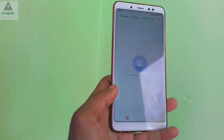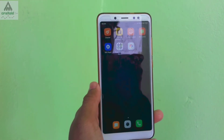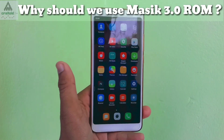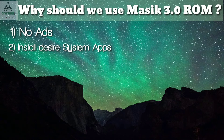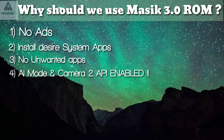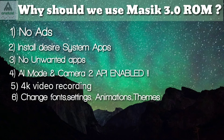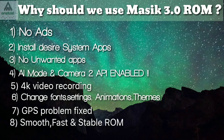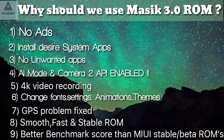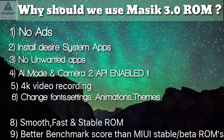There are lots of other features and I suggest you try them yourself. Now let's answer why you should use Masic 3.0 ROM. There are no ads like on MIUI ROM, you can install desired system applications, and there will be no unwanted bloatware. The camera has AI mode and Camera2 API enabled, you can record 4K video at 30fps, and there are many features like font settings, animation settings, theme settings, gestures, and transition settings. The GPS problem from earlier versions is fixed and this ROM is smooth, fast, stable, and reliable. The benchmark score is also much better than MIUI stable and beta ROM.